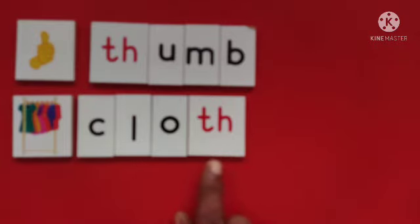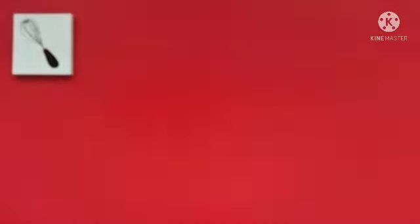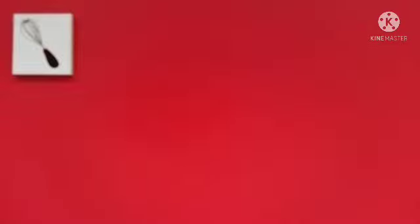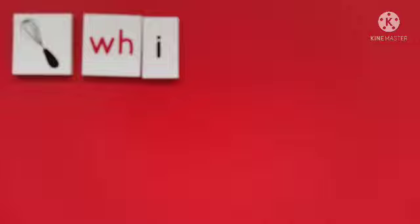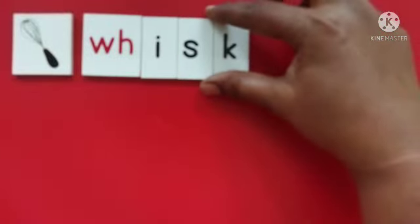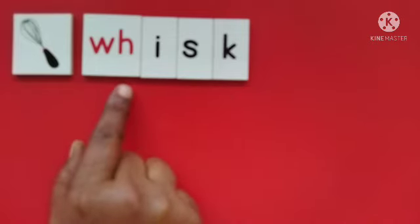The next phonogram I am going to take is 'wh.' For that, the picture card is 'whisk.' When I say 'whisk,' the first sound we listen to is 'w,' then 'e-sk': w-e-sk, 'whisk.' Children, wherever you see W and H together, you have to read it as 'w.'